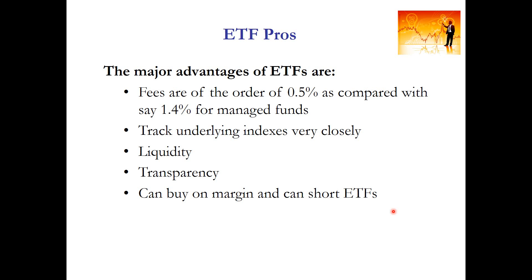ETFs are also transparent — they clearly disclose their holdings, which are generally related to the particular index they are trying to track — and there can also be tax benefits. Because ETFs are traded on the market just like a normal stock, they can be invested in much the same way. That means ETFs can be sold short: if an investor wants short exposure to an entire market, they can do so by shorting an exchange-traded fund. ETFs can also be bought and sold on margin, so you can get leverage benefits using margin, as we have seen for stocks. Short selling and margin trading facilities are typically not available for other managed fund shares, such as mutual funds.